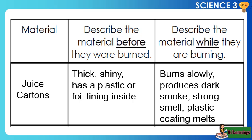Material: Juice cartons. Describe the material before it was burned — thick, shiny, has a plastic or foil lining inside. Describe the material while it is burning — burns slowly, produces dark smoke, strong smell, plastic coating melts.